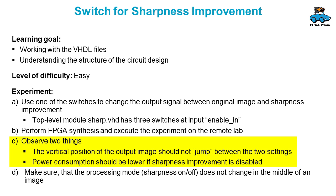The vertical position of the output image should not change and should not jump between the two settings. You should also have a look at the power consumption, because if you are not doing sharpness improvement — if you do not have this processing — a good circuit should use lower power.